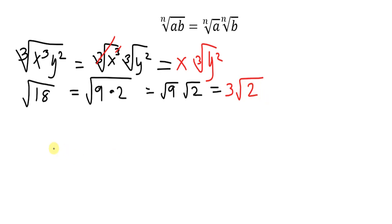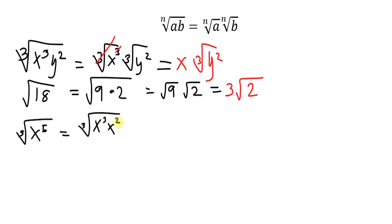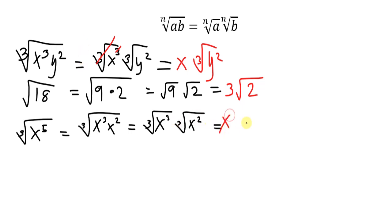Another example: the cube root of x raised to 5. We can separate this — x raised to 5 can be written as x raised to 3 times x raised to 2, because 3 plus 2 equals 5. Then we separate into the cube root of x raised to 3 times the cube root of x raised to 2. The cube root of x cubed is x, and the cube root of x squared remains as is.